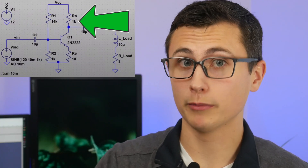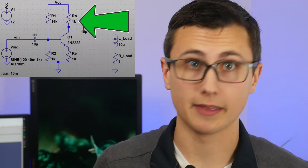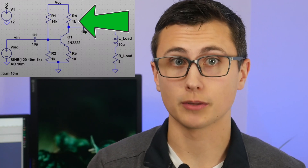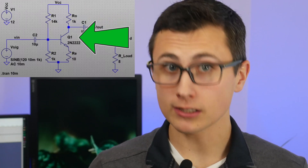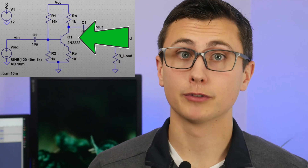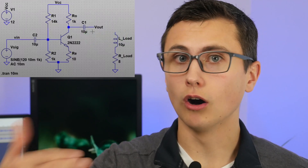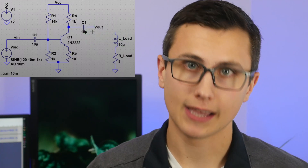With a Class A amplifier, there's some form of a current source, whether that be a resistor or something more complicated, and a transistor. That transistor is responsible for choosing how much voltage ultimately gets applied to the output. There's only one issue with that system.